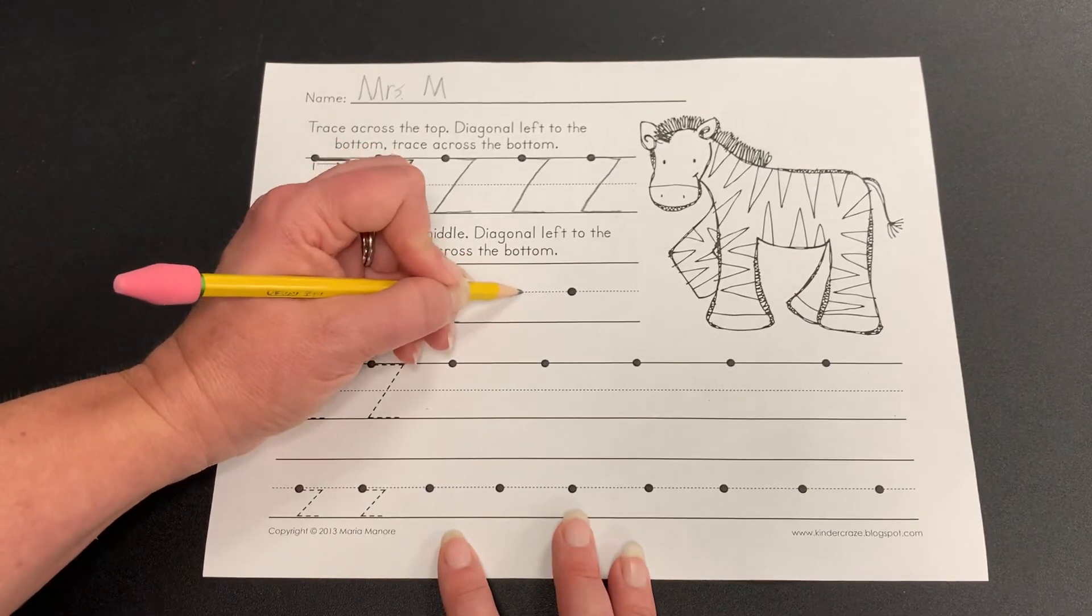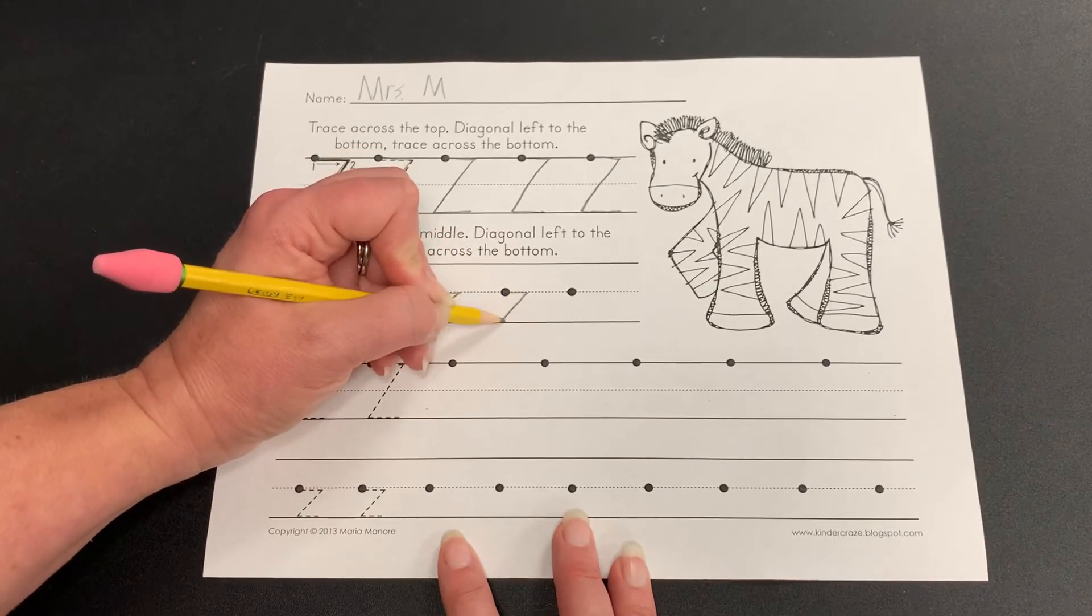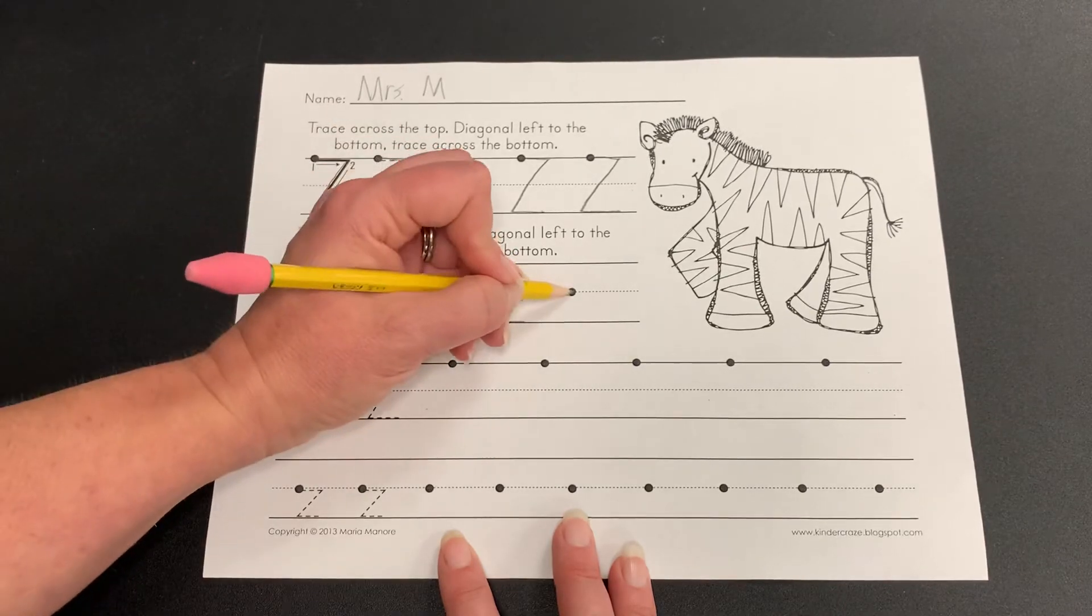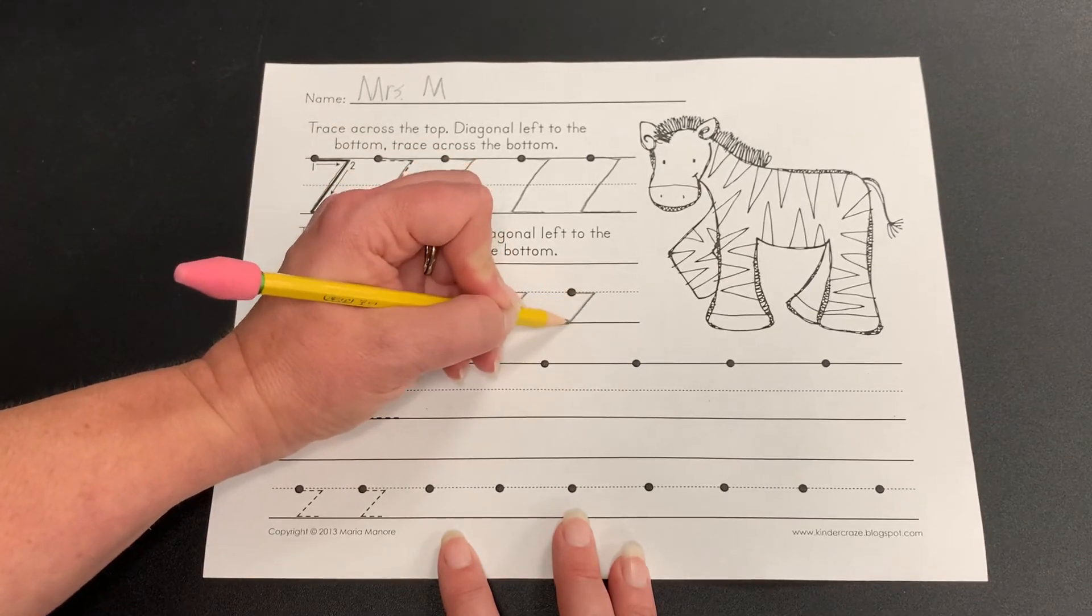Again, straight, slanted, straight. Straight, slanted, straight.